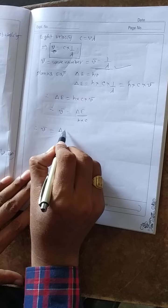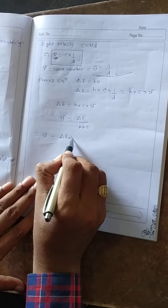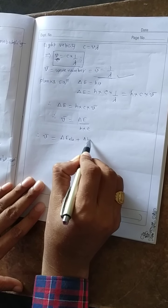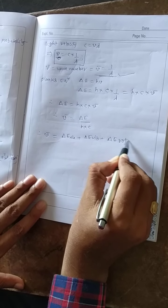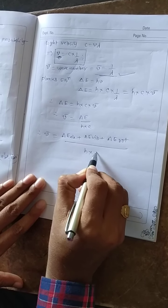Delta E equals delta E electronic plus delta E vibrational plus delta E rotational, all divided by h into c.